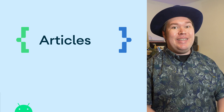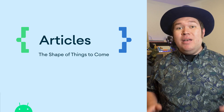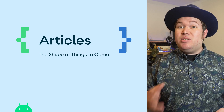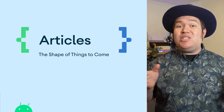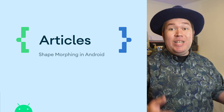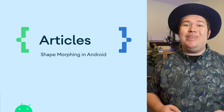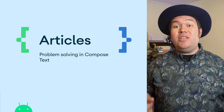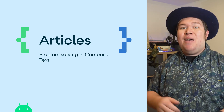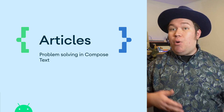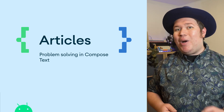We've had a bunch of fun articles come out in the past week. In "The Shape of Things to Come," Chet outlines how to create rounded shapes in AndroidX using the new Graphics Shapes Library. This sets you up to learn how to animate between shapes in shape morphing in Android. In "Problem Solving in Compose Text," Alejandra takes you step-by-step through her process for solving a text layout problem, weighing pros and cons of each solution along the way.